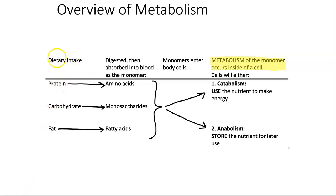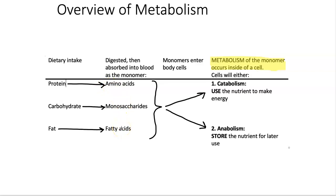We know that we eat three macronutrients: protein, carbohydrates, and fats. After we ingest those in food, our GI tract uses enzymes to break down these macronutrients into their individual building blocks or monomers. For instance, protein is broken down to amino acids, carbohydrates into monosaccharides, and fats into fatty acids.